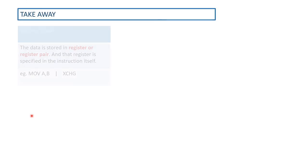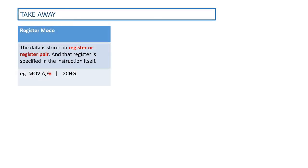Let's wrap up. If the data is present in some sort of register or register pair, and that register is specified in the instruction itself, then that instruction is in register mode of addressing — like MOV A, B, where data in register B is copied to the accumulator. In XCHG, data is present in both DE and HL pairs and they are exchanged, so it also belongs to register mode of addressing.